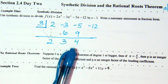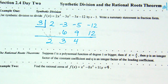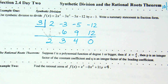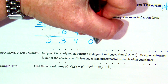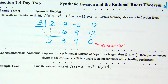Now what do I do with that 4? Multiply by 3: 3 times 4 is 12. What do I do with that 12? Add: negative 12 plus 12 is 0. What does that 0 represent? My remainder. So in this particular case I have a remainder of 0.